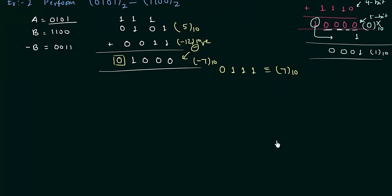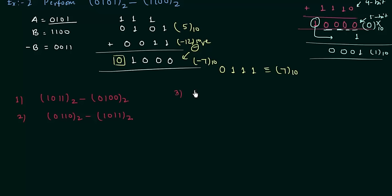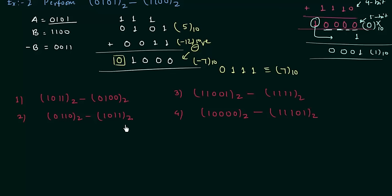Now we will move to homework problems. I have four homework problems for you. First: perform the subtraction 1011 minus 0100. Second: 0111 minus 0101. Third: 11001 minus 1111 — this is a five-bit number minus a four-bit number. And last: 100000 minus 11101 — a five-bit number minus another. These are the four homework problems. This is all for this presentation; see you in the next one.